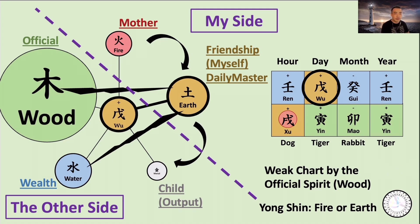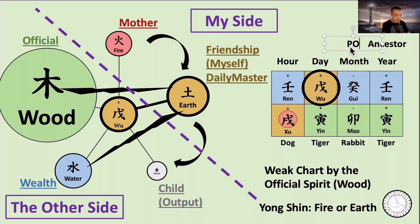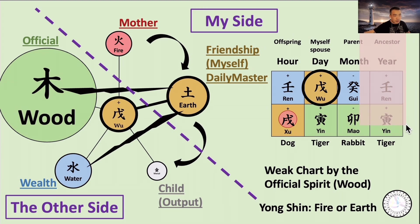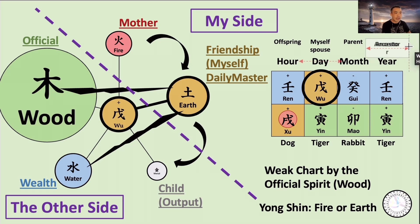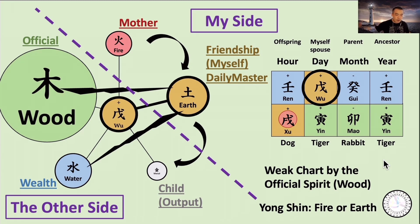The second reason people focused on the yearly sign: in the long past, the year pillar represents our ancestors, the month could be parents, the day could be myself or spouse, and the hourly pillar could be offspring. Long ago, the ancestor's energy was really important — what is my lineage, what is my family — that determined life. So before modern times, people cared more about the yearly stem and branch. If your ancestor was a king, you could live like a king; if your ancestor was a slave, you had to live like a slave. That's why the yearly branch animal sign was talked about the most.